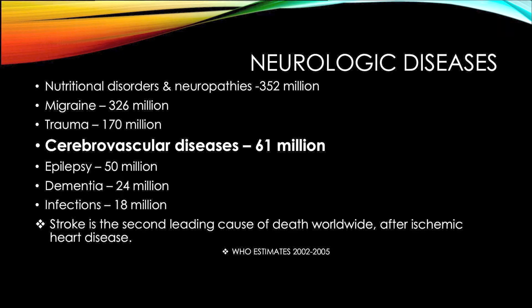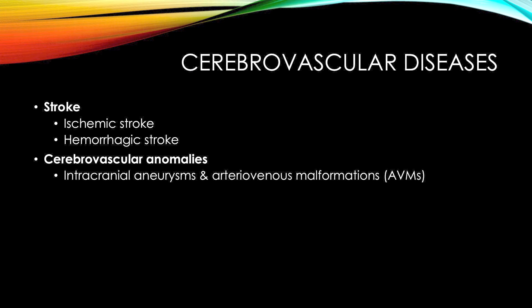Cerebrovascular diseases consist of stroke and cerebrovascular anomalies, such as intracranial aneurysms and arteriovenous malformations. Intracranial aneurysms are weakened portions of arteries, and arteriovenous malformations are malformations of arterial and venous junctions. These lead to rupture of the arteries. Rupture of the arteries causes stroke, which is of two types: ischemic stroke and hemorrhagic stroke.